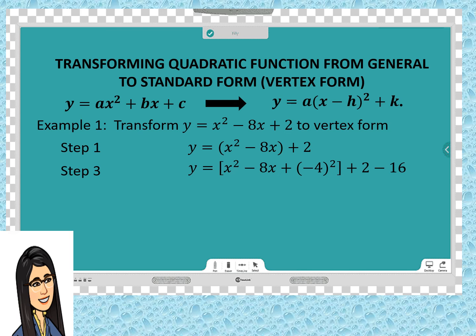Then, let us apply step 4. Inside the parenthesis, it's now a perfect square. So, y = (x - 4)². Then combine 2 - 16 = -14. This is the vertex form. So, y = (x - 4)² - 14. So, our vertex is (4, -14).